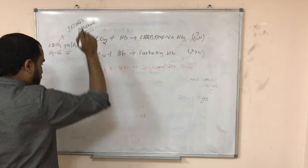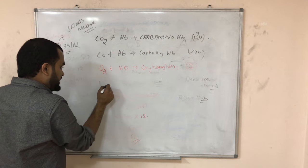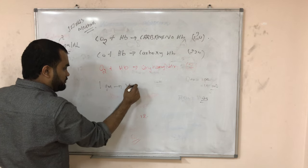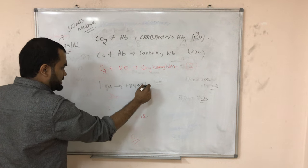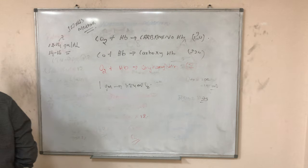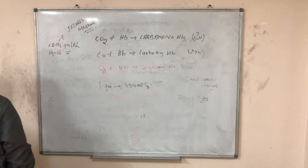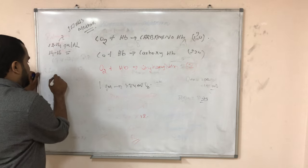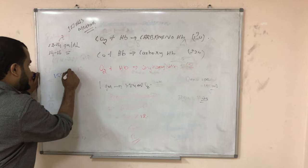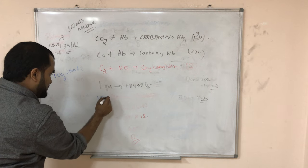One gram of hemoglobin can carry 1.34 ml of oxygen. See, if I take 15 grams, it means around 100% oxygen. If I take 15 grams, it means it can carry around 20.1 ml of oxygen.